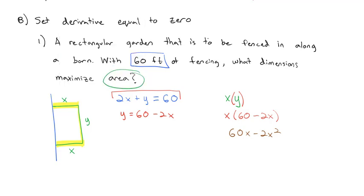And if I distribute, we end up with 60x minus 2x squared. That is the equation for the area. That is what we want to maximize. Well, to maximize an equation we know we take the derivative, which is 60 minus 4x, and set it equal to 0. Adding 4x to both sides and dividing both sides by 4, I get that x has to be equal to 15.